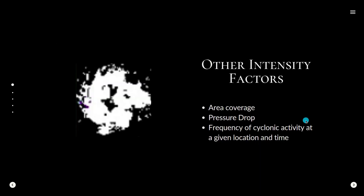Along with wind speed, we will also consider other features to determine cyclone intensity, such as area coverage, pressure drop, and frequency. We can find area coverage by counting white pixels in the binarized images of the cropped region of interest. Using our historical data, we will also show the frequency with which cyclones form in a given region and the probability of a cyclone evolving into a major cyclone.